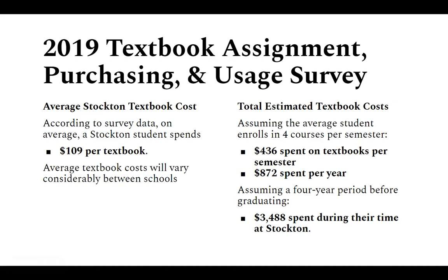In terms of total estimated textbook costs, assuming an average student takes four courses per semester, they're looking at about $436 on textbooks per term, $872 per year, and assuming a four-year period — which not everyone can honestly complete at a university — they're looking at about $3,408 spent during their time at Stockton on textbooks alone.